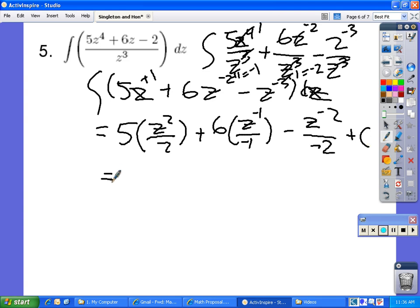Then we simplify this. 5 half z to the power of 2 plus negative 6z to the power of negative 1 plus negative 2 over negative 2 z to the negative 2. Plus c. This is your answer.